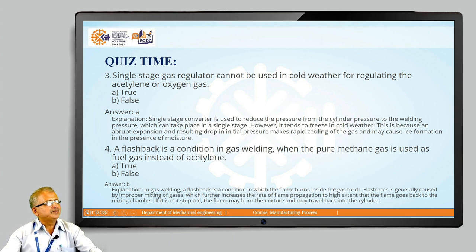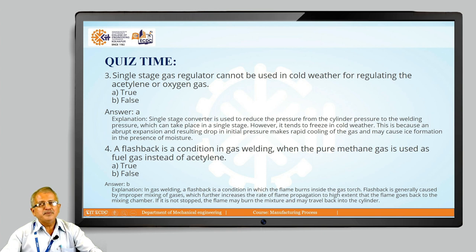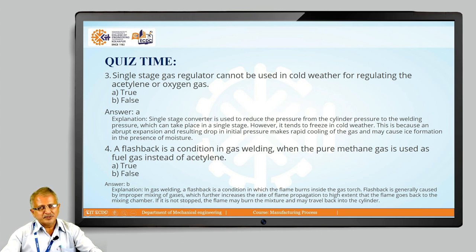The fourth question — a flashback is a condition in gas welding when pure methane gas is used as a fuel gas instead of acetylene. True or false? The answer is false. Flashback is a condition in which the flame burns inside the gas hose, generally caused by improper mixing of gases, which increases the rate of flame propagation to such an extent that the flame travels back into the mixing chamber and may further travel back into the cylinder. This is why safety precautions are essential.